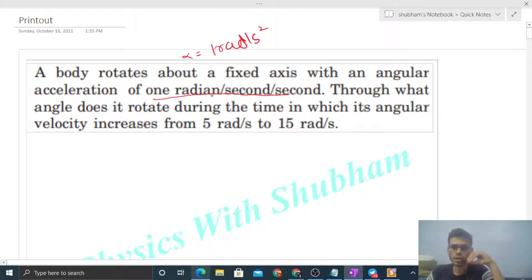So alpha is given. Through what angle does it rotate during the time in which its angular velocity increases from 5 radian per second to 15 radian per second? So this is initial angular velocity, that is 5 radian per second.